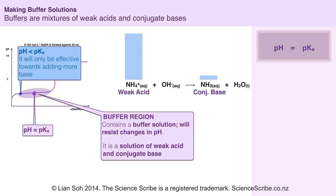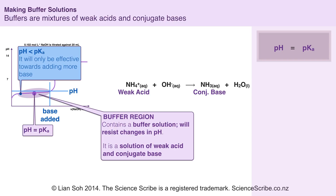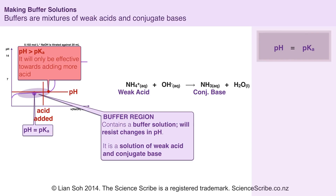Now suppose if I had a buffer solution which had ammonium ions and ammonia and the pH of this particular buffer solution was less than the pKa value of ammonium. This means that this particular buffer solution would only be effective towards adding more base, because I can add a lot of sodium hydroxide and the pH only climbs by a very small value. On the other hand, if I had a buffer solution with a pH value higher than pKa, that means it is effective towards adding more acid, because as I try to decrease the pH, it only decreases a small amount even as I add a lot of acid.